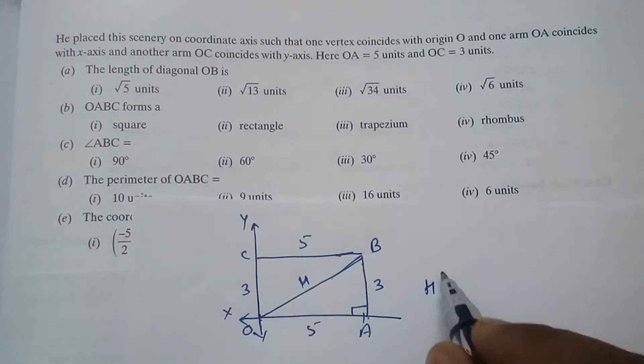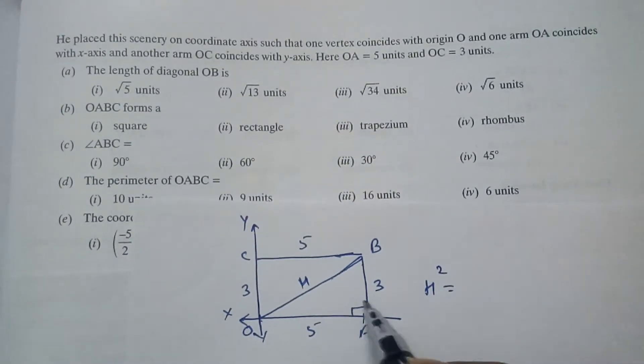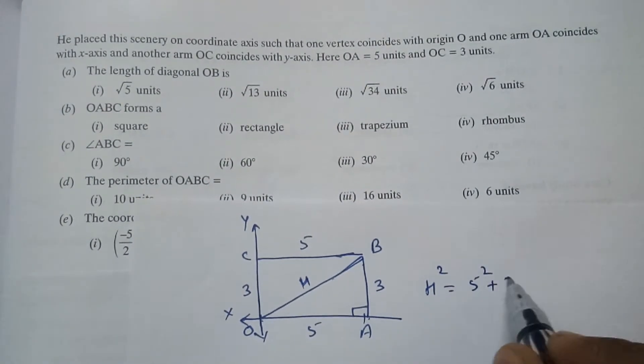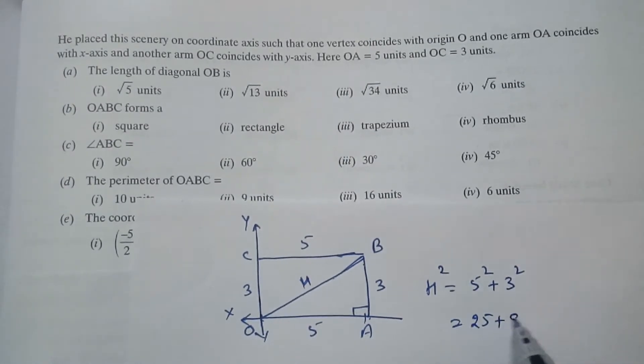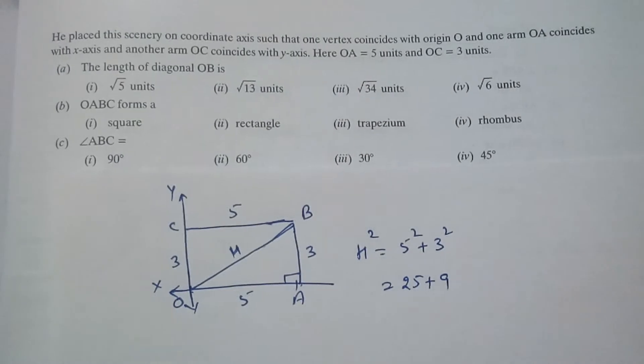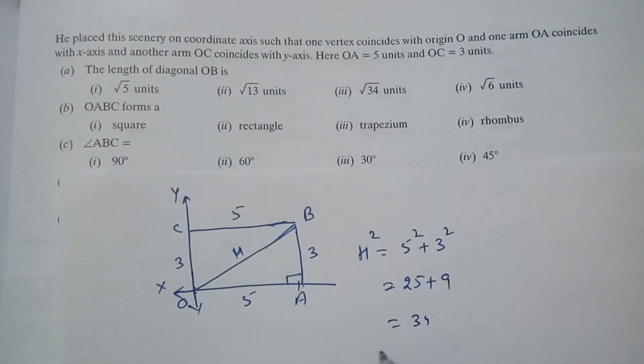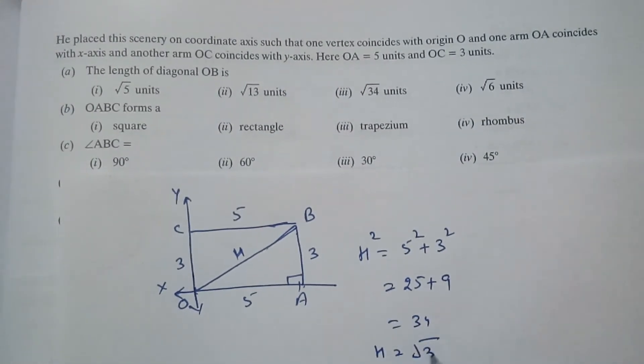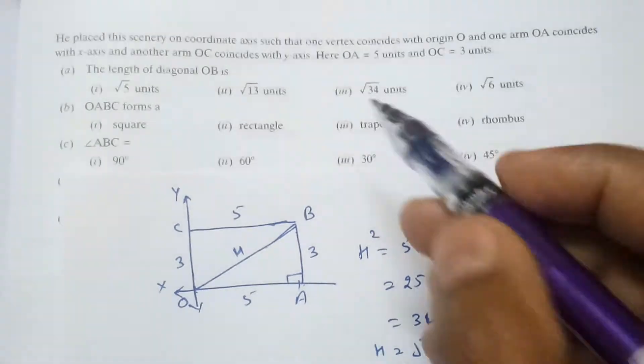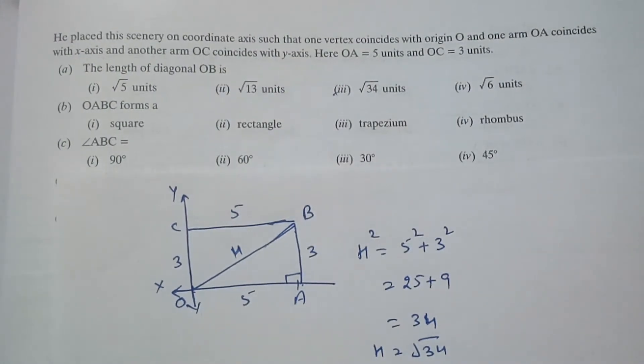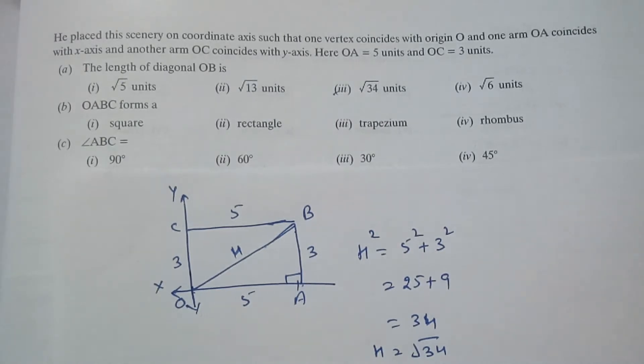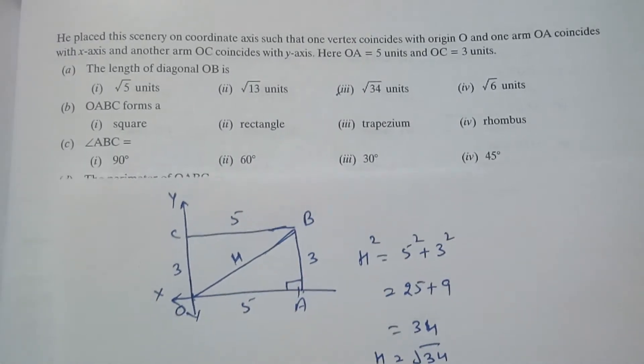So it becomes H square equals to 5 square plus 3 square, which equals to 25 plus 9. And 25 plus 9 is 34. So H equals to root 34. So this third option is there that this length of this diagonal OB equals to root 34.